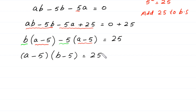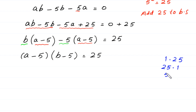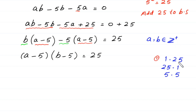We now have two factors on the left side. Since a and b are positive integers, 25 can be factorized as 1 times 25, 25 times 1, or 5 times 5. So we must solve all three cases.